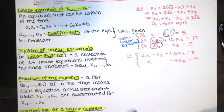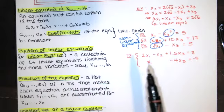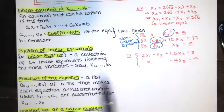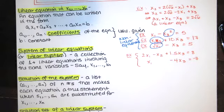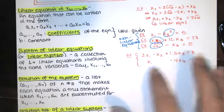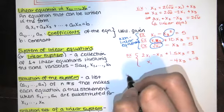A solution of a system is a list of numbers — an ordered n-tuple (S₁, S₂, ..., Sₙ) — that makes each equation true when substituted for X₁ through Xₙ. Normally we'd call these X, Y, and Z for three variables, but once we go beyond three we use subscripts. So n could be 10, giving us S₁ through S₁₀. A solution is just a set of numbers you can plug in to satisfy all equations simultaneously.